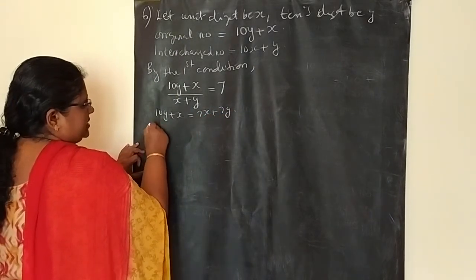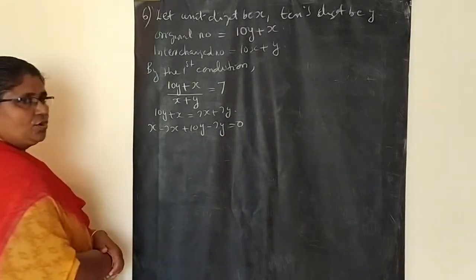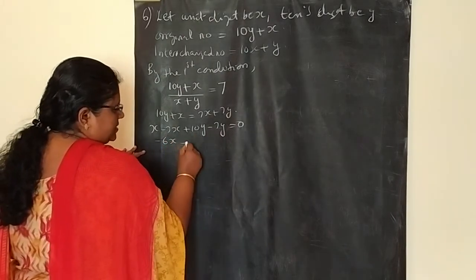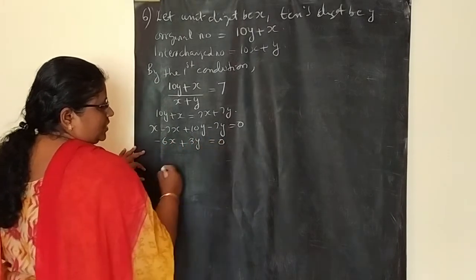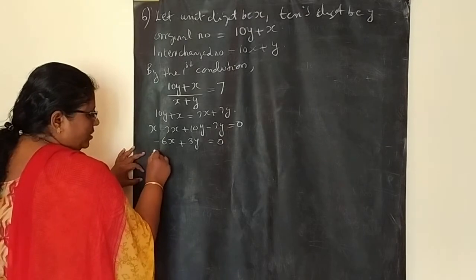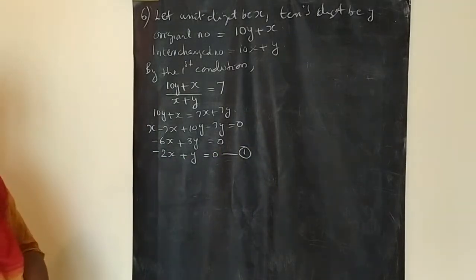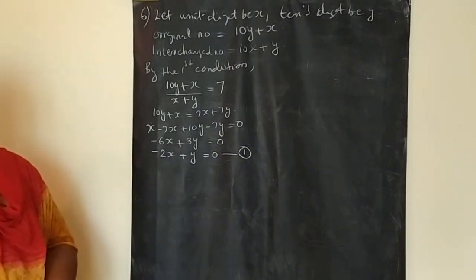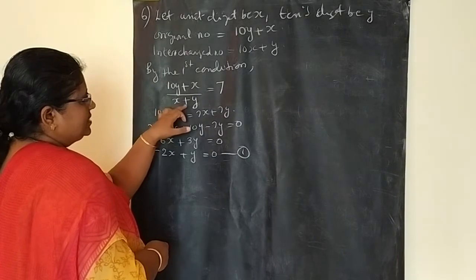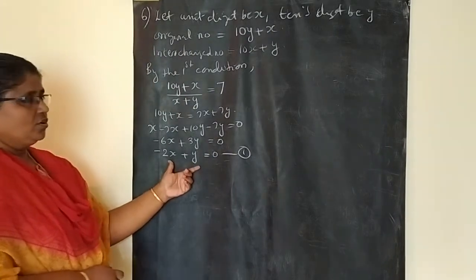So, rearranging: X minus 7X plus 10Y minus 7Y is equal to 0. That gives minus 6X plus 3Y is equal to 0. Dividing by 3, we get minus 2X plus Y is equal to 0. This is the first equation. The first condition is: if the original number is divided by the sum of the digits, the quotient becomes 7.